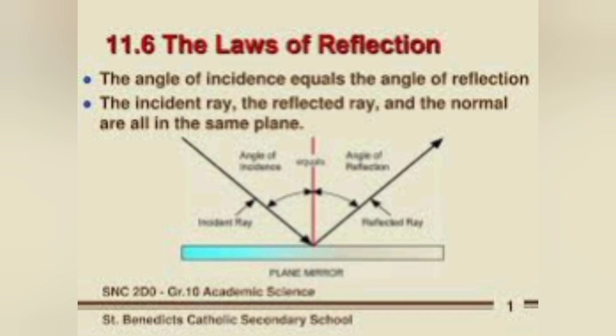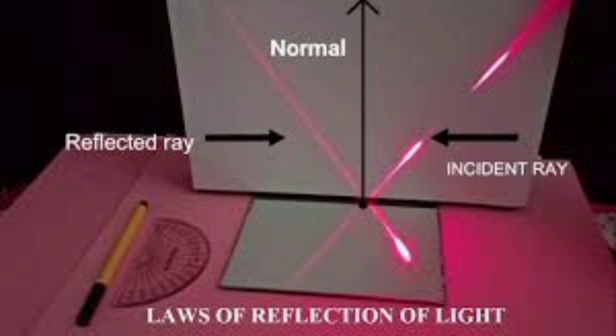The reflection of a light ray at a surface obeys the following two laws of reflection. Number one, the incident ray, the reflected ray and the normal at the point of incidence all lie on the same plane. Second one, the angle of incidence, that is angle I, is equal to the angle of reflection, that is angle R.